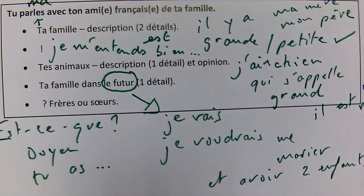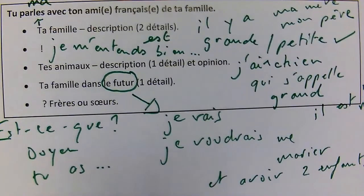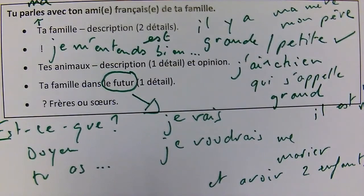Bonjour, tu parles avec ton ami française de ta famille. Alors — 'bonjour, est-ce que tu peux me parler de ta famille s'il te plaît?' 'Ah oui, ma famille est grande, il y a moi, ma mère et mon père.' 'Super, est-ce que tu t'entends bien en général avec ta famille?' 'Oui, je m'entends très bien avec ma famille, ils sont très sympa.'